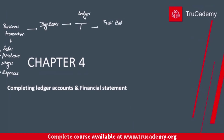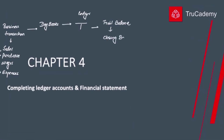We then take these closing balances and prepare the trial balance. The trial balance is a large T-account which carries all the closing balances of each individual T-account from the ledger. Once the trial balance gets balanced, we are good and we proceed to prepare the financial statements.